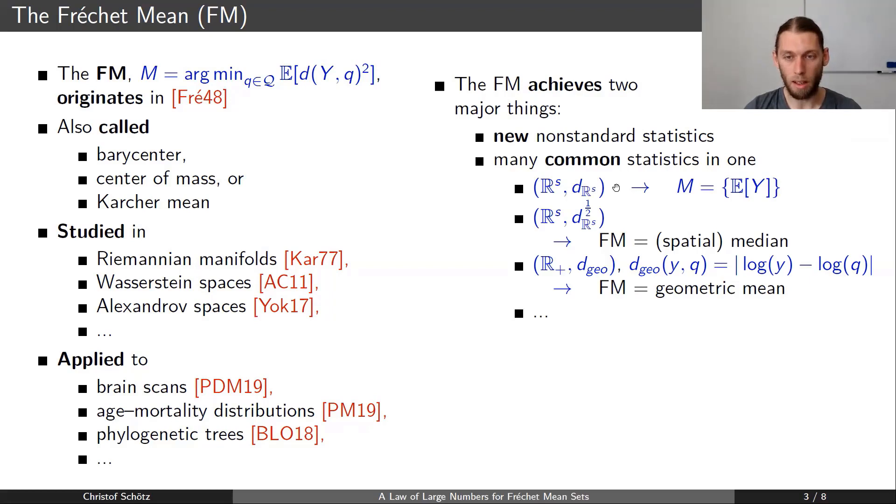For example, the Fréchet mean in a Euclidean space is just the expectation, and if you then take the square root of the Euclidean distance, you arrive in one dimension at the median, and if you have more than one dimension, this would be called spatial or geometric median. Also, other notions of mean like the geometric mean are also Fréchet means.